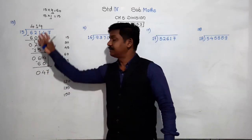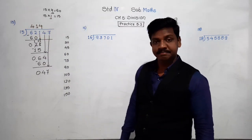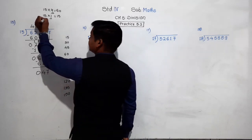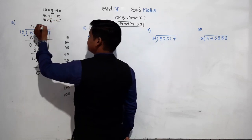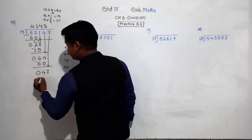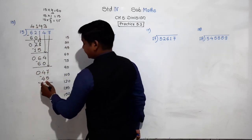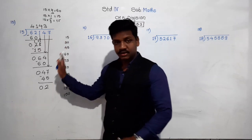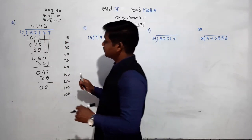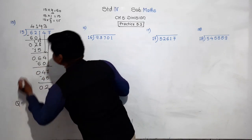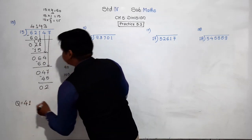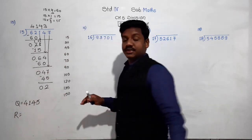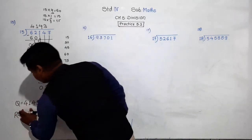Now divide 47 by 15. Is there 47 in the table of 15? No. The smaller number than 47 in the table of 15 is 45. 15 threes are 45. So 3 goes in the quotient. Subtract 45 from 47: the remainder is 2. All digits are over. So the quotient is 4,143 and the remainder is 2.